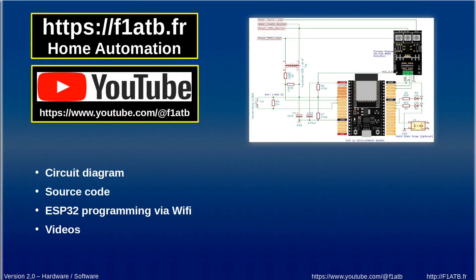if you want more detail on this system on my website https f1atb.fr f1atb is my call sign my ham radio call sign it's one of my hobbies and so on this website on the home automation section you will find details on this router. You obviously you can see on youtube some videos on the subject the youtube channel f1atb so you will find circuit diagram the source code in open source